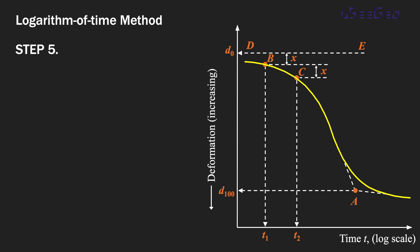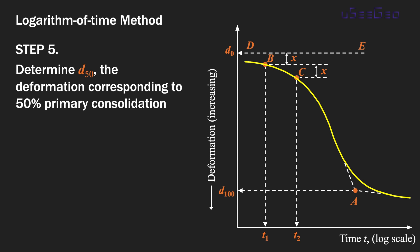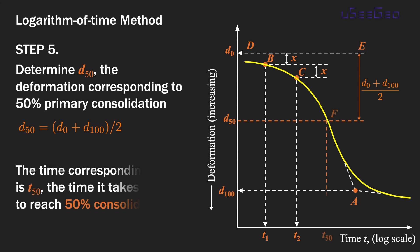Step number five is to determine d50, the deformation corresponding to 50 percent primary consolidation. By definition, d50 is simply d0 plus d100 divided by two. You have d0 and d100 from previous steps, so summing and dividing by two gives d50. The corresponding point on the curve is called point F, and the time at point F is defined as t50 — the time it takes the soil to reach 50 percent consolidation.